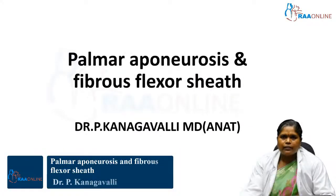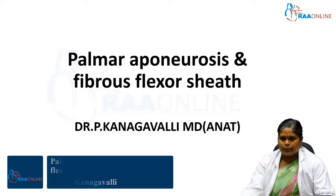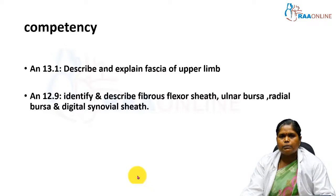Welcome to Raw Online. Today we will discuss palmar aponeurosis and fibrous flexor sheath. The competencies of our topic are to describe and explain the fascia of the upper limb, and to identify and describe the fibrous flexor sheath, ulnar bursa, radial bursa, and digital synovial sheath.